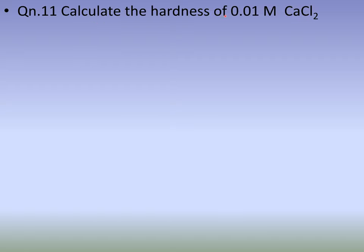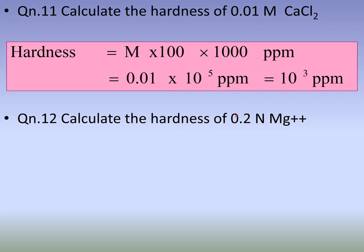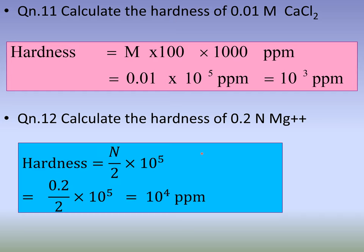Example: Calculate the hardness of a 0.01 molar calcium chloride solution. Using M × 10⁵: 0.01 × 10⁵ = 10³ ppm. For normality: calculate hardness of 0.2 normal magnesium ion. Using N/2 × 10⁵: (0.2/2) × 10⁵ = 10⁴ ppm.